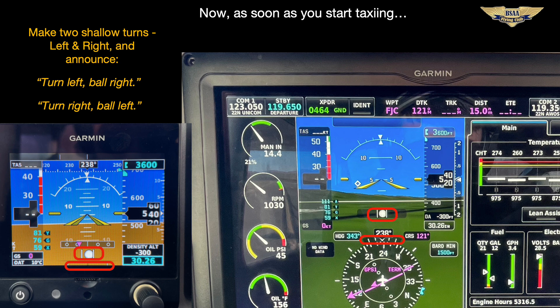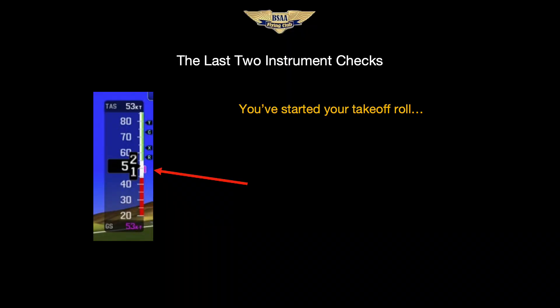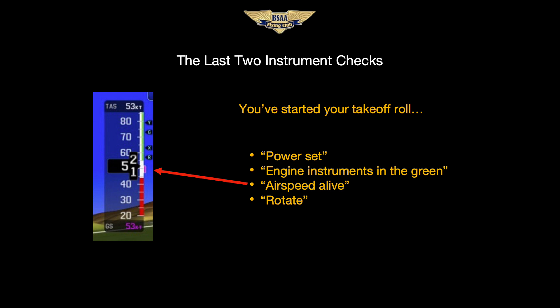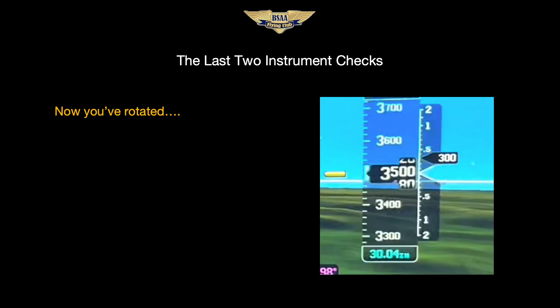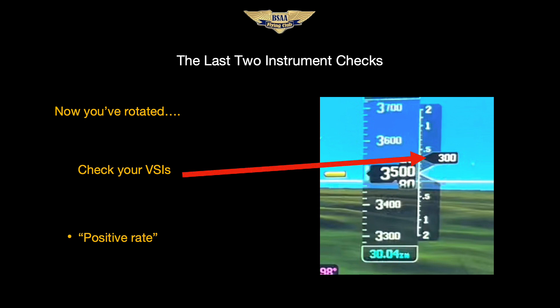Now there are only two things left and they are both part of your takeoff. We've checked everything we can, and you can continue with the peace of mind that nothing has been forgotten. After setting the power and checking your engine instruments, you look at the airspeed tapes — both of them — and say 'airspeed alive.' Now we know that's working properly. After liftoff, usually around 100 or 200 feet AGL, your VSI will start to work — remember there's a lag in that. Check your VSIs, both of them, to verify they're working properly. Positive rate. Done.